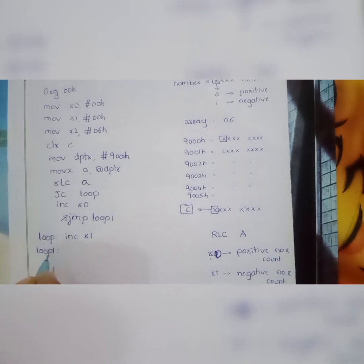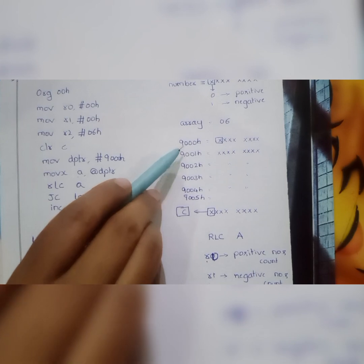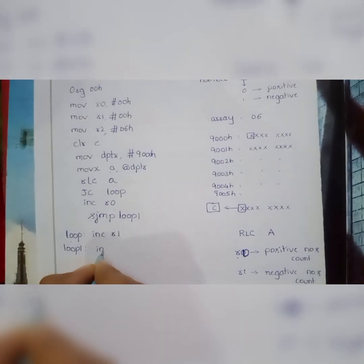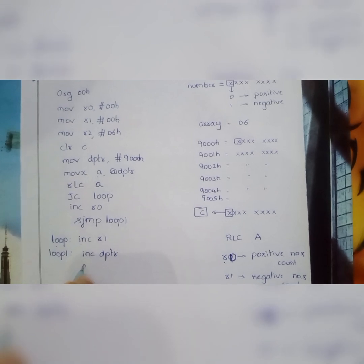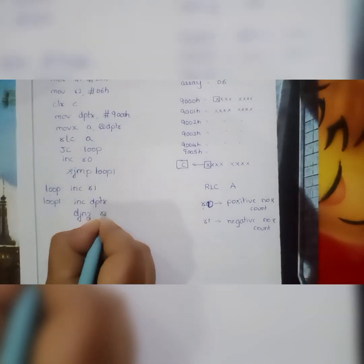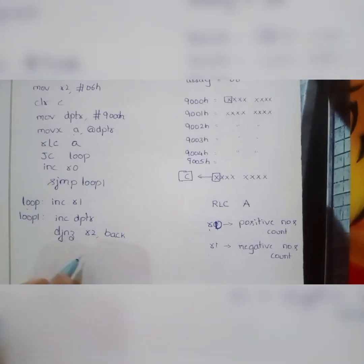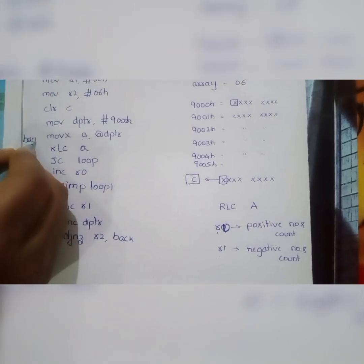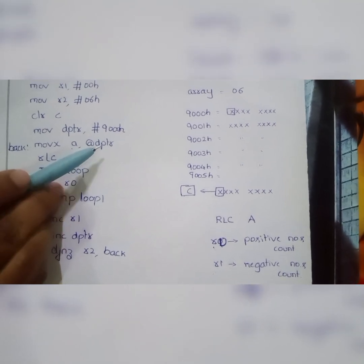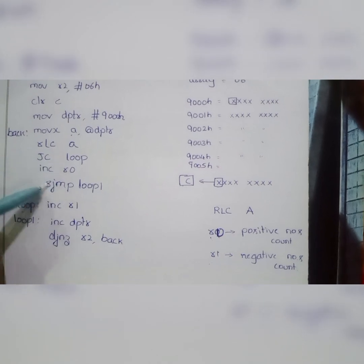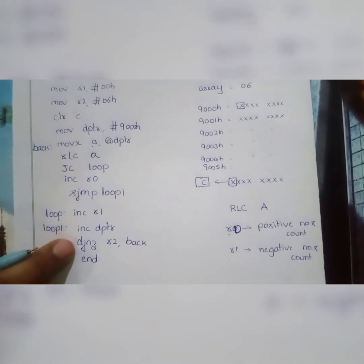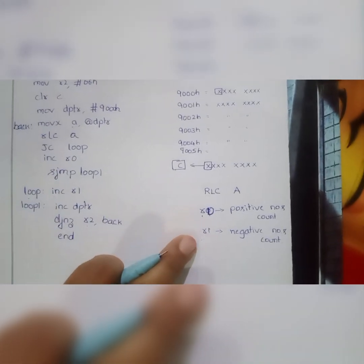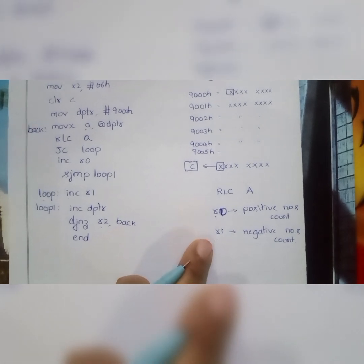In loop1, we increment DPTR to move to the next memory location and repeat this process based on the array size. We stored 6 in register R2, so we use the DJNZ instruction: decrement R2 until it becomes 0, jumping back to fetch the next value into the accumulator and repeat the same set of instructions. Once R2 reaches 0, the loop exits and the program ends. The result is checked in R0 for the positive count and R1 for the negative count.